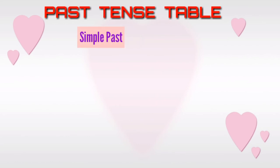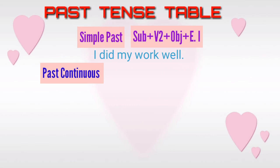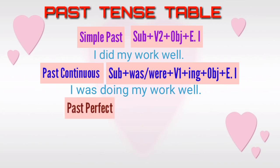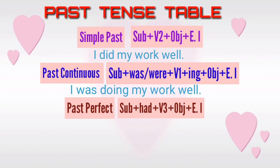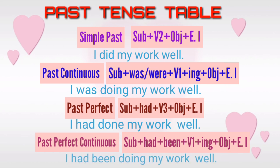Simple past: subject plus V2 plus object plus extra information — I did my work well. Past continuous: subject plus was or were plus V1 plus -ing plus object plus extra information — I was doing my work well. Past perfect: subject plus had plus V3 plus object plus extra information — I had done my work well. Past perfect continuous: subject plus had plus been plus V1 plus -ing plus object plus extra information — I had been doing my work well.